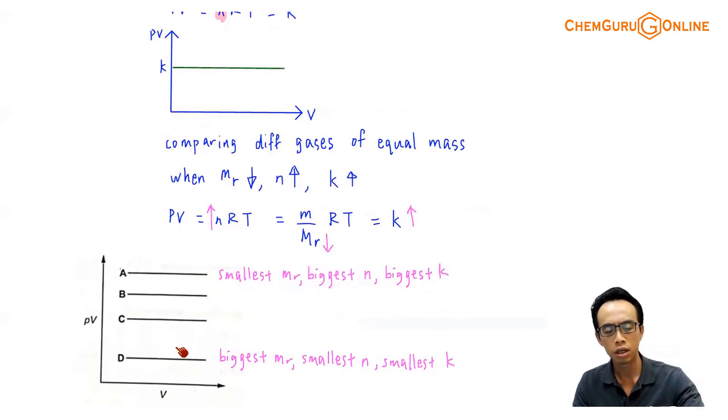If I consider all my four options, if I have four of these graphs A, B, C, D, it will mean that the one which is higher up will have a bigger K, because the N is larger, and it will mean that the MR is smaller. So this A on top, it has the smallest MR, which means that it will have the biggest number of moles, and therefore it has the largest NRT, and it has the biggest K value. So A will correspond to the gas with the smallest molar mass.